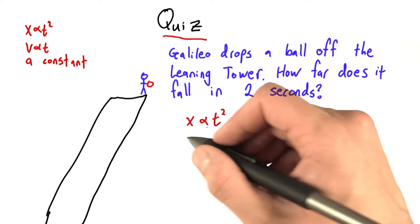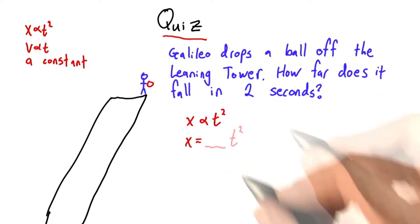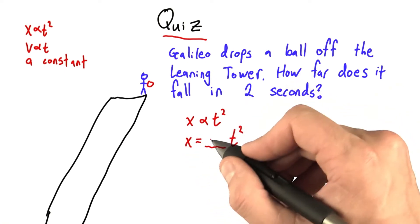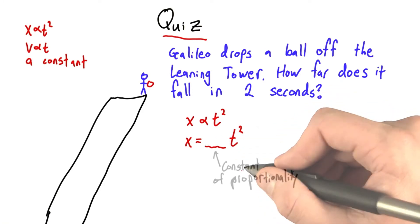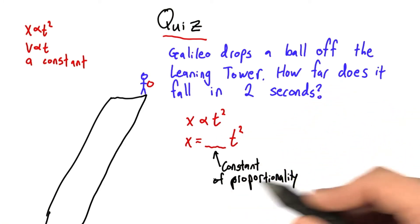What we want is not a proportionality relationship, we want an equality. We want x equals some constant, some number that never changes, times t squared. And this constant is called the constant of proportionality.